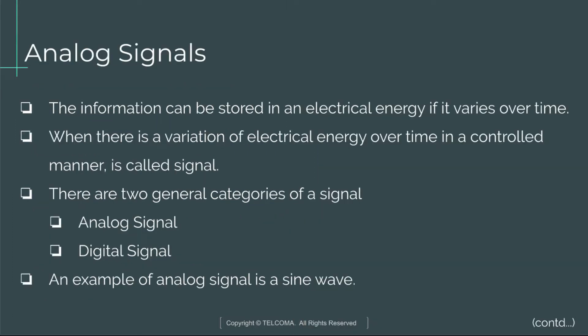Next is analog signals. Information can be stored in electrical energy if it varies over time. When there is a variation of electrical energy over time in a controlled manner, it is called a signal. There are two general categories of signal: analog signal and digital signal. An example of an analog signal is a sine wave.